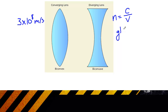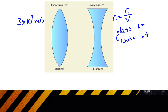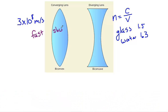For example, glass has an index of refraction of 1.5, meaning the speed of light in air is 1.5 times faster than the speed of light in glass. In water, light slows down as well, but not as much as in glass — the index of refraction for water is about 1.3. So when talking about lenses, you simply need to know that light travels fast outside the lens and slower inside the lens.